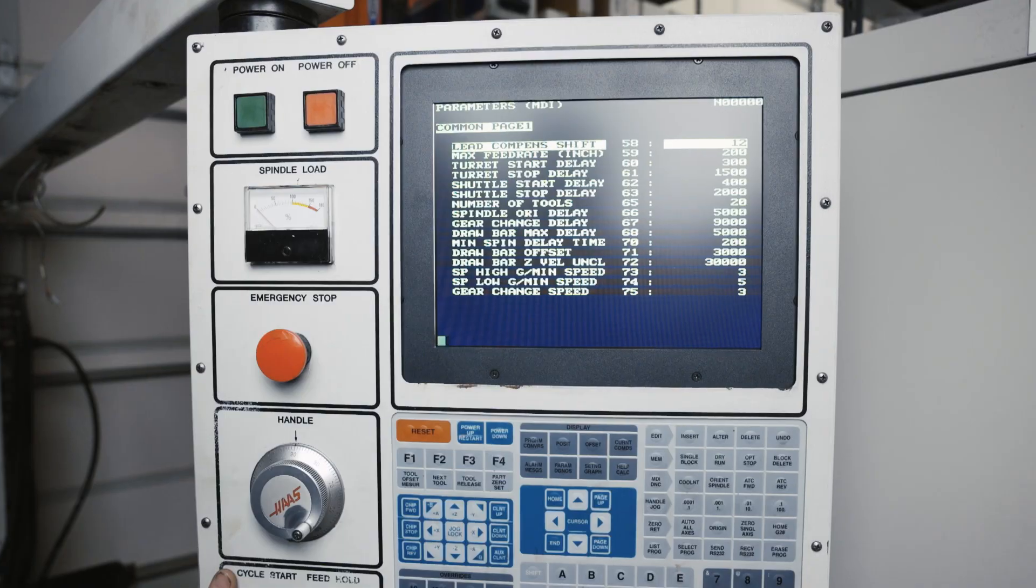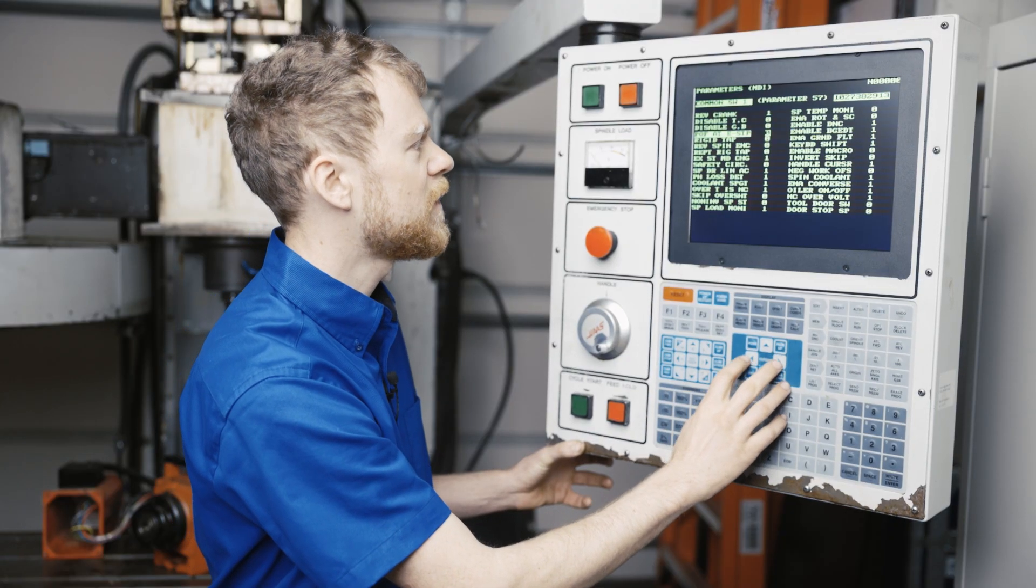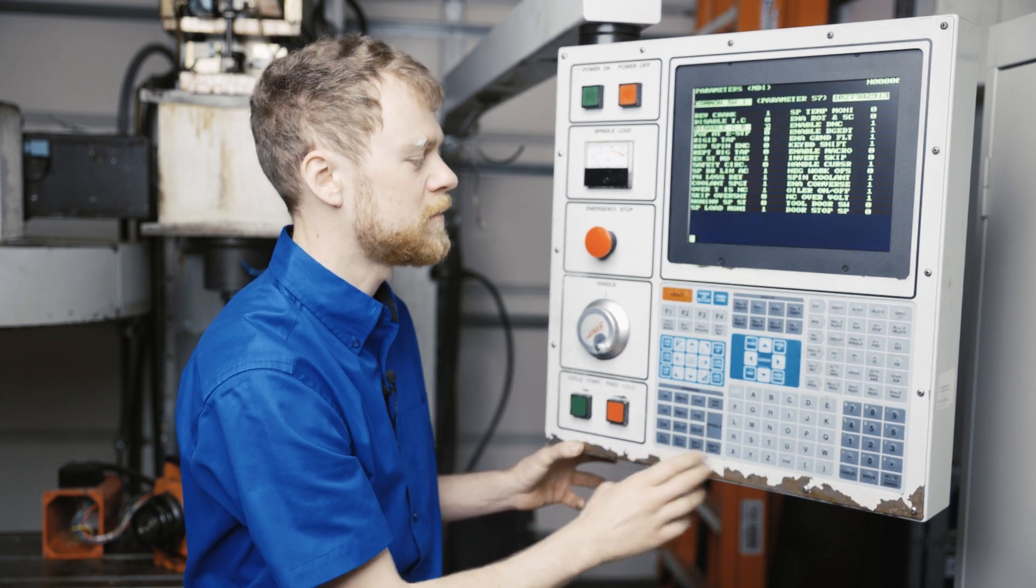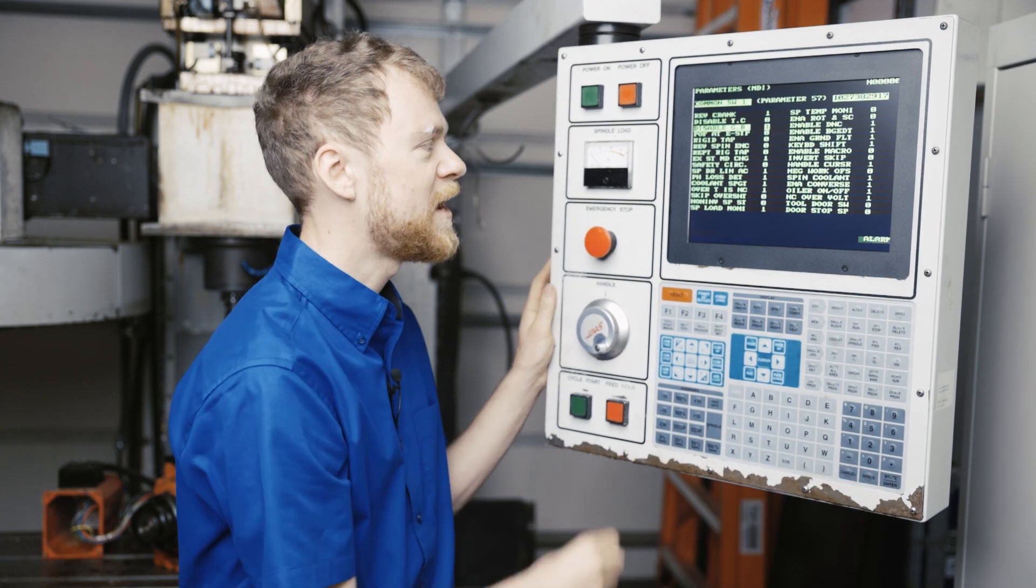Now we're going to go to parameter 57, press the down arrow key. You can use the left and right arrow keys to go to the third bit down from the top where it says disable gearbox. E-stop must be pressed in. Press the number 1 and press enter.